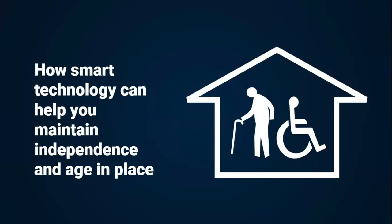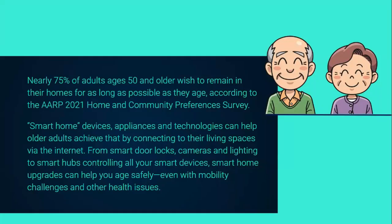How smart technology can help you maintain independence and age in place. Nearly 75% of adults ages 50 and older wish to remain in their homes for as long as possible as they age, according to the AARP 2021 Home and Community Preferences Survey. Smart home devices, appliances, and technologies can help older adults achieve that by connecting to their living spaces via the internet — from smart door locks, cameras, and lighting to smart hubs controlling all your smart devices. Smart home upgrades can help you age safely even with mobility challenges and other health issues.